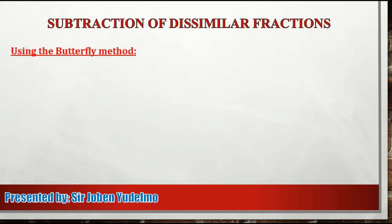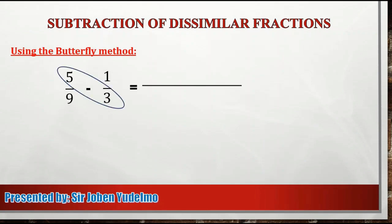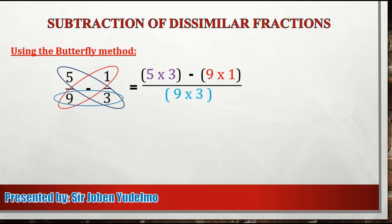Next, we are going to try to find the difference between 5 ninths and 1 third by using the butterfly method. So una, i-multiply natin ang numerator ng ating first fraction sa denominator ng ating second fraction. So that's 5 times 3. Next, copy the operation — that's minus. Then, multiply the denominator of our first fraction with the numerator of our second fraction. So that's 9 times 1. For the denominator, we are going to multiply the two denominators. So that's 9 times 3. Now, we can simplify the operations. 5 times 3, that's 15. Bring down the operation. 9 times 1, that's 9. For the denominator, 9 times 3, that's equal to 27.